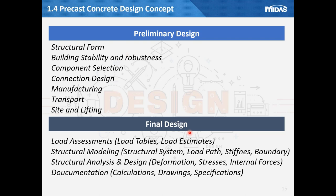Even when designing a precast concrete structure, there is a preliminary design stage and a final design stage. In the preliminary design stage, not only structural safety review but also a series of manufacturing processes and plans for members, transportation, movement plans, and construction methods or sequences at the site must be considered, including the lifting plan and securing safety for lifting. In the final design stage, it is essential to review the load, determine the system modeling method, and set correct boundary conditions. We should review the safety of displacement, stress, and member forces, and finalize the drawing for the design.